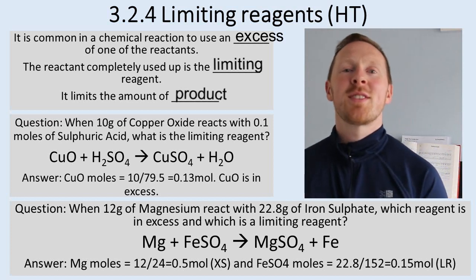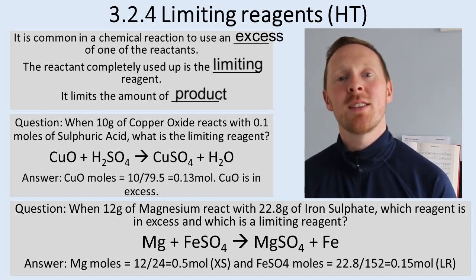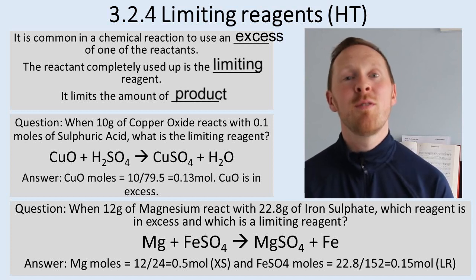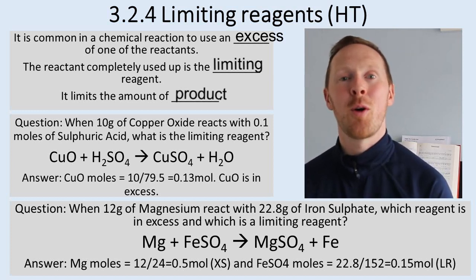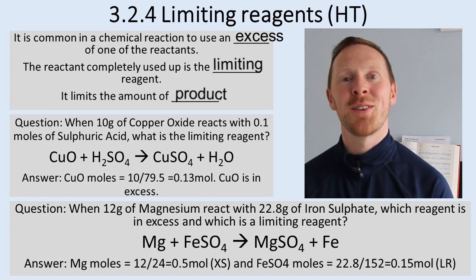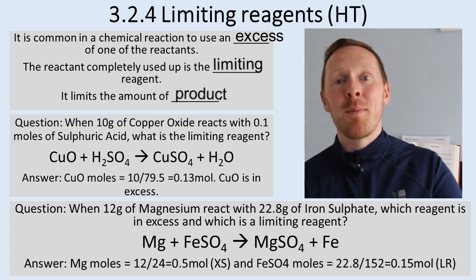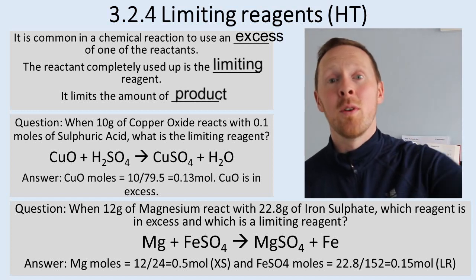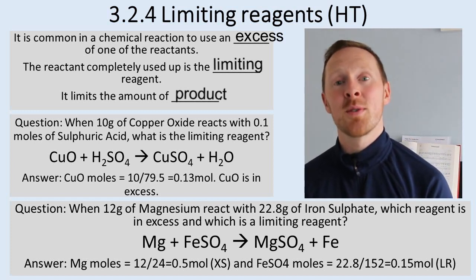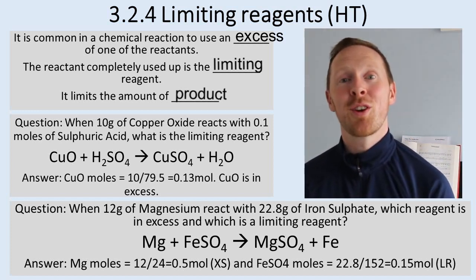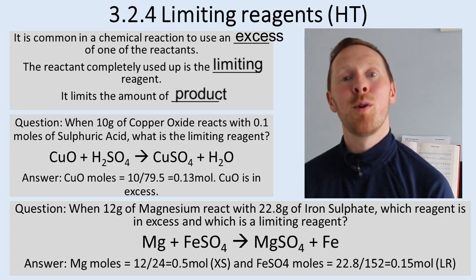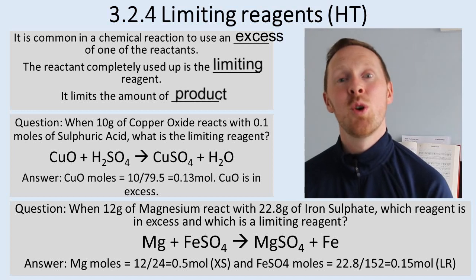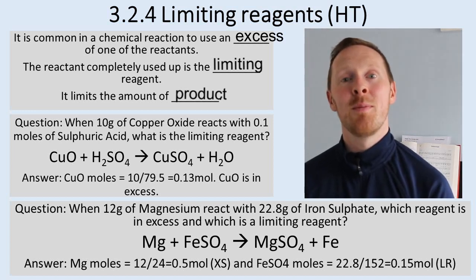For example, if I took 10 grams of copper oxide and reacted it with 0.1 moles of sulfuric acid — you've done this reaction, you made those blue copper sulfate crystals. When you did this experiment you put a spatula in, stirred it till it reacted, then added another one until copper oxide was in excess. So let's look at the numbers: 10 grams of copper oxide reacting with 0.1 moles of sulfuric acid — which is in excess and which is the limiting factor?